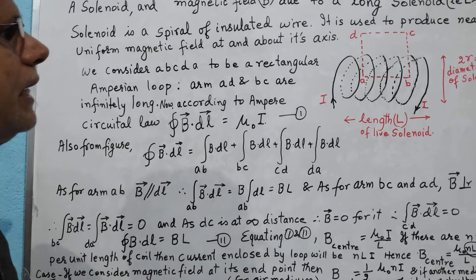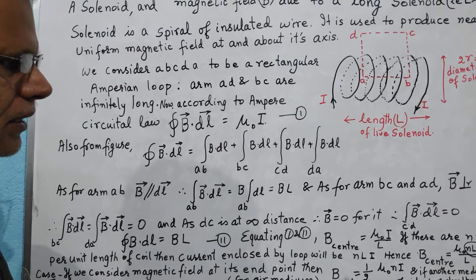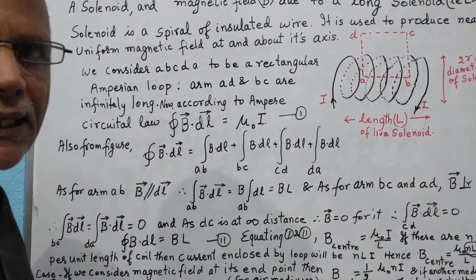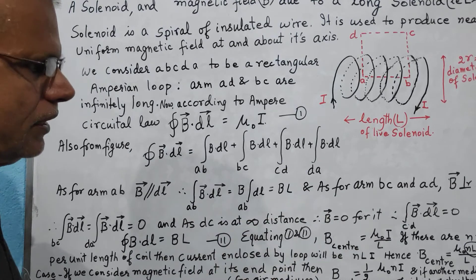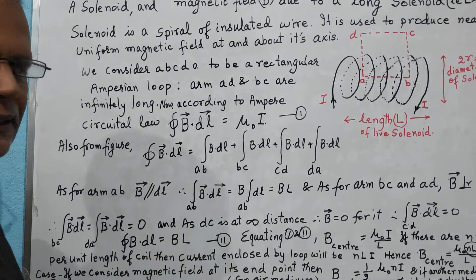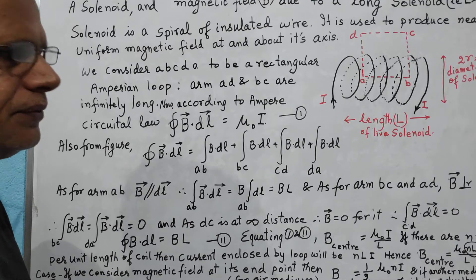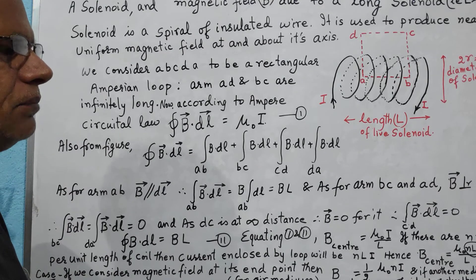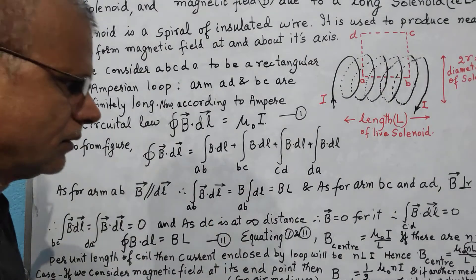The magnetic field at the axis and about the axis of the solenoid is therefore uniform, because it does not depend on anything else except the number of turns per unit length — which for a given solenoid is constant — and the current flowing through the wire. Once I is constant and N is already constant, the magnetic field is uniform. This is a big source of artificially giving us uniform magnetic field, which natural magnets are not able to provide to the same extent.